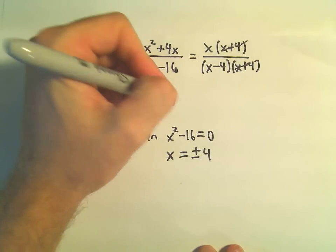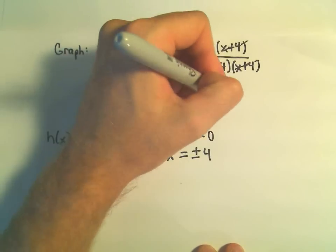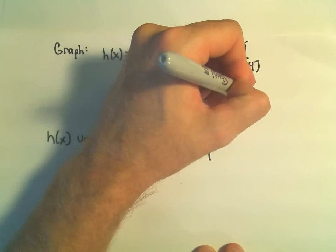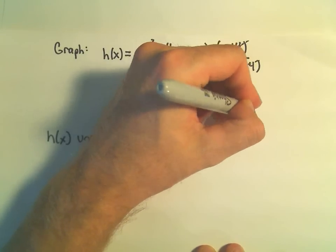Okay, so the domain of this simplified version, the domain now is all reals except x equals positive or negative 4.